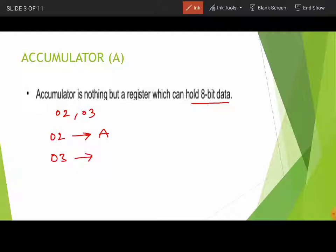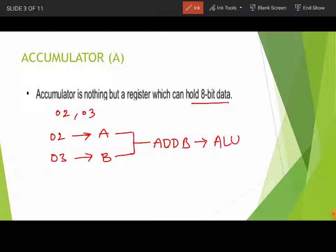The other operand can be in any other general purpose register — B, C, D, E, H, or L. Here we are choosing register B, so the instruction we write is ADD B. The ALU adds the two numbers two and three, and the result will be stored in the accumulator register.